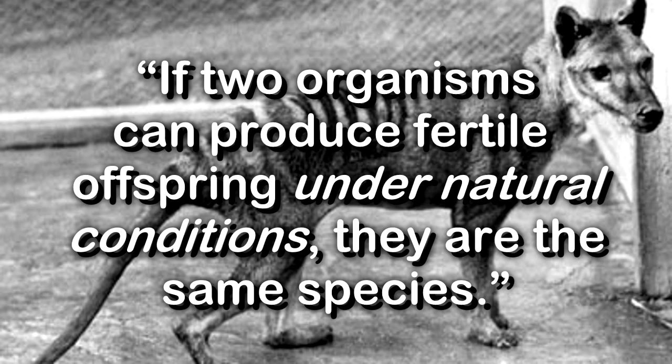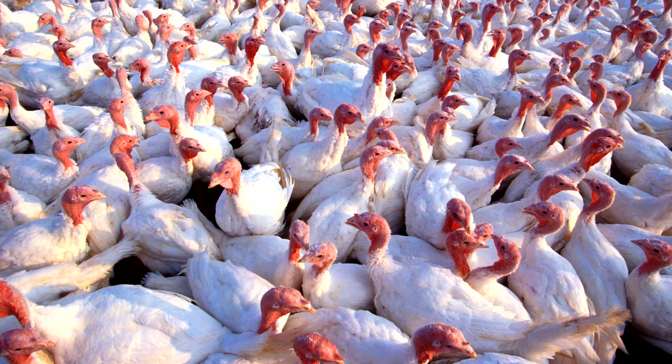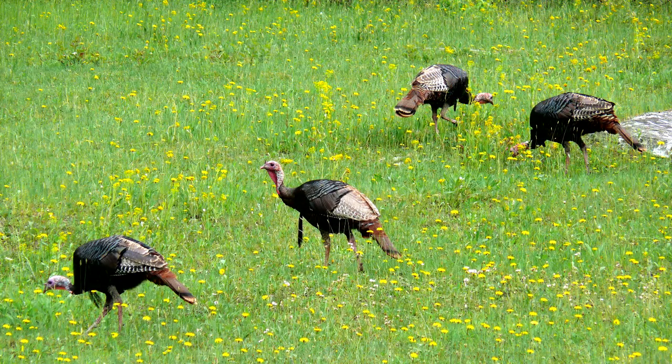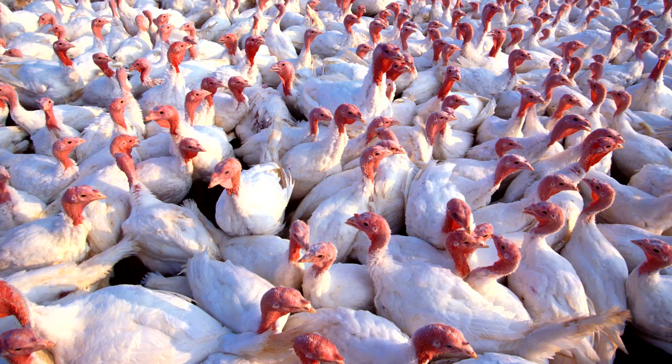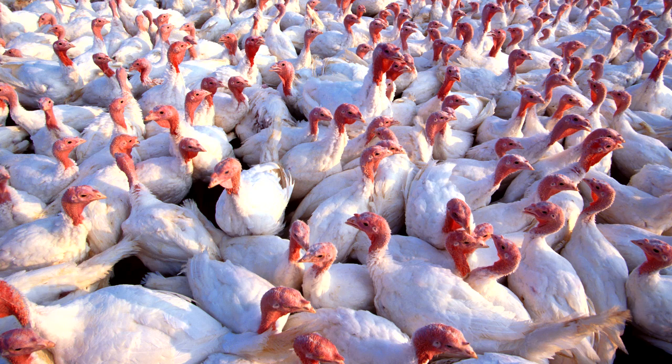But domesticated food animals, such as turkeys, cannot mate with each other at all, although wild turkeys still can. And farmers have to reproduce them by artificial insemination. Does this make each turkey its own individual species? The biggest corkscrew in the works is ring species.